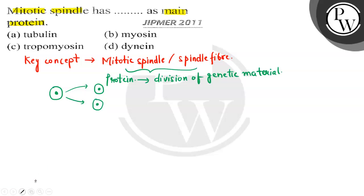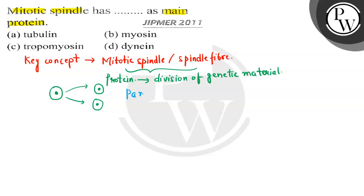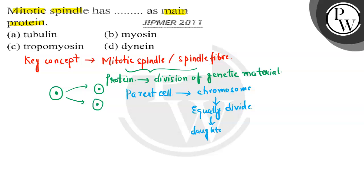This process is regulated by the spindle fiber. The main function of the spindle fiber is to equally divide whatever chromosomes are present in the parent cell into the two different daughter cells, so that both daughter cells get the same number of chromosomes and we get genetically identical daughter cells.